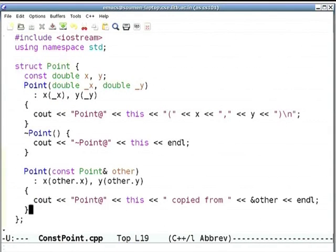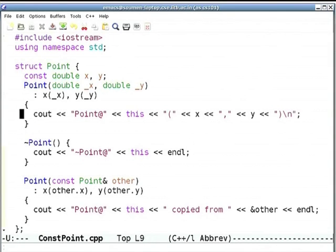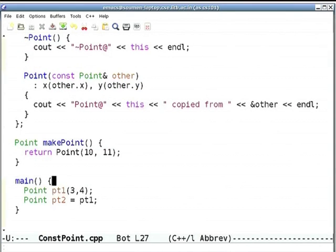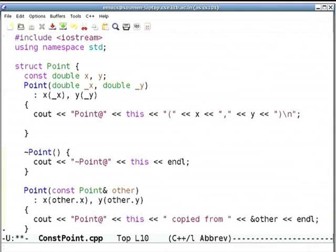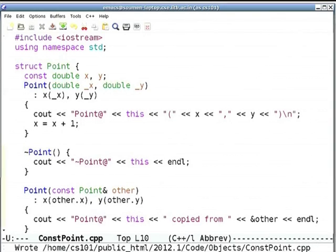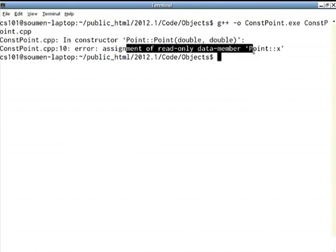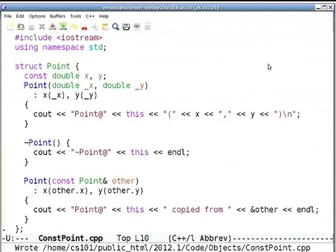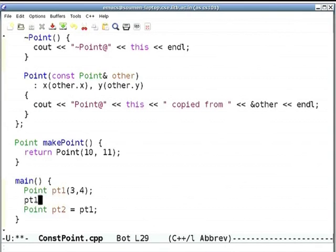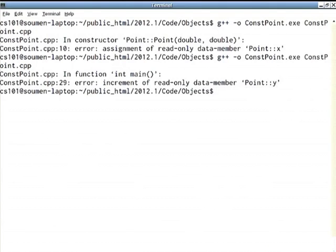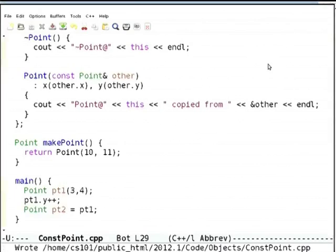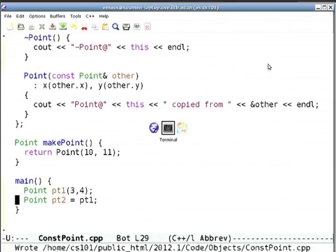As a demo, here is const point in which x and y are const doubles, and they are initialized as I said in the slide, and then I print out point at this address with x and y. Now suppose I say something like x equals x plus 1. That will not be allowed - assignment of read-only data member point::x. Not only here, but anywhere - you cannot even inside main do something like pt1.y++. That will not be allowed either - increment of read-only data member point::y. So no one can modify those values. Once initialized, they are there.